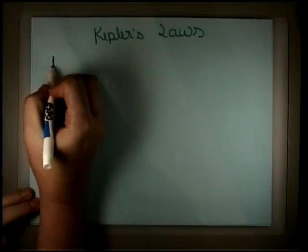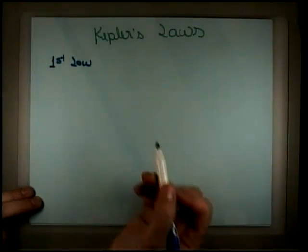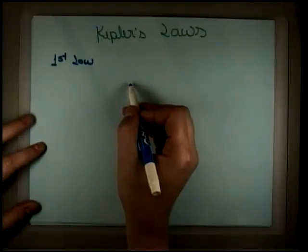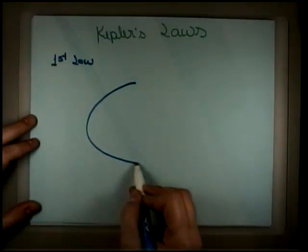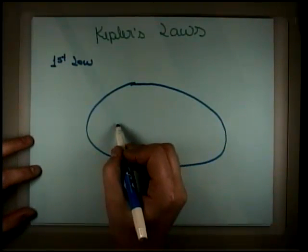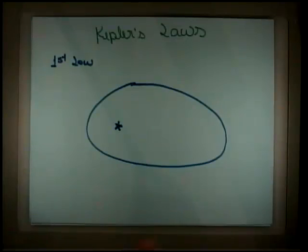The first law is the one that says the planets orbit in elliptical orbit around the sun with the sun in one of the focus of the ellipse. So let me try to draw an ellipse here. Let's put the sun in one of the focus. And of course I'm exaggerating the ellipse.